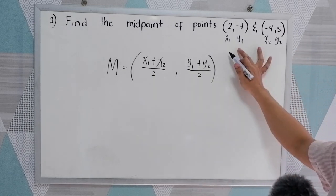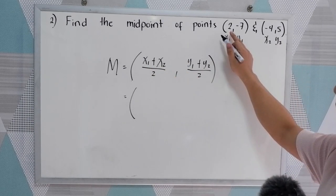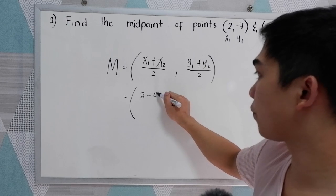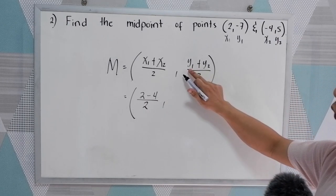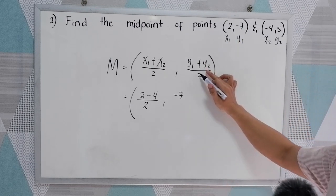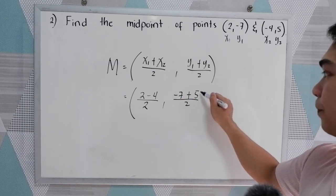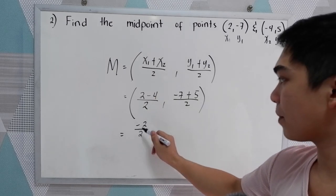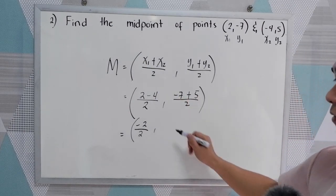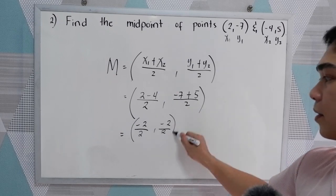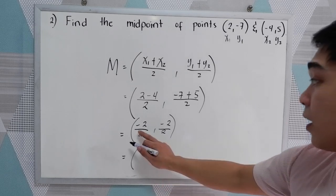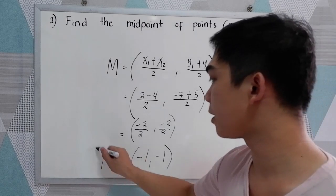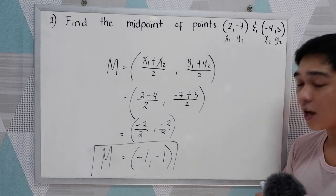Let us now substitute the given. For x sub 1 we have 2, plus x sub 2 negative 4, so this will become 2 minus 4, all over 2. And y sub 1 is negative 7, plus y sub 2 which is 5, all over 2. Now, 2 minus 4 is negative 2 over 2. Negative 7 plus 5 is negative 2, all over 2. So our midpoint: negative 2 divided by 2 is negative 1, and negative 2 divided by 2 is negative 1. Our midpoint is negative 1, negative 1.